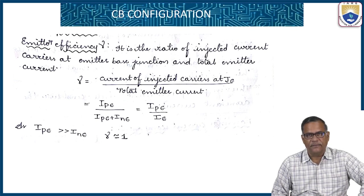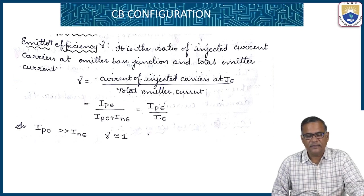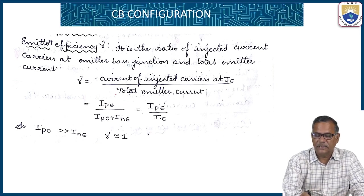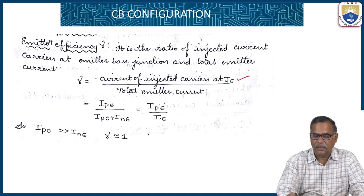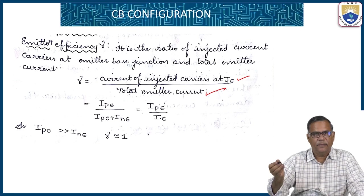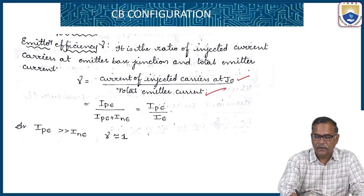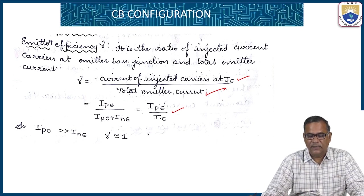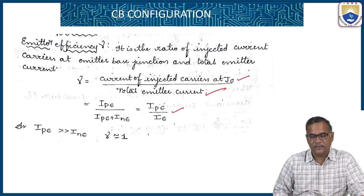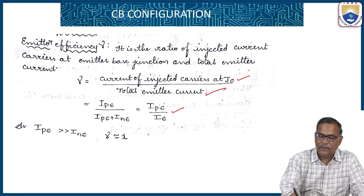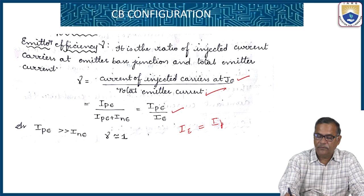Emitter efficiency γ is defined as the ratio of injected current carriers at the emitter-base junction to the total emitter current. It equals IPC divided by IE, which is IPC divided by (IPE + INE). The total emitter current IE equals IPE plus INE, where IPE is the hole current injected from emitter to base and INE is the electron current injected from base to emitter. Emitter efficiency is less than 1.